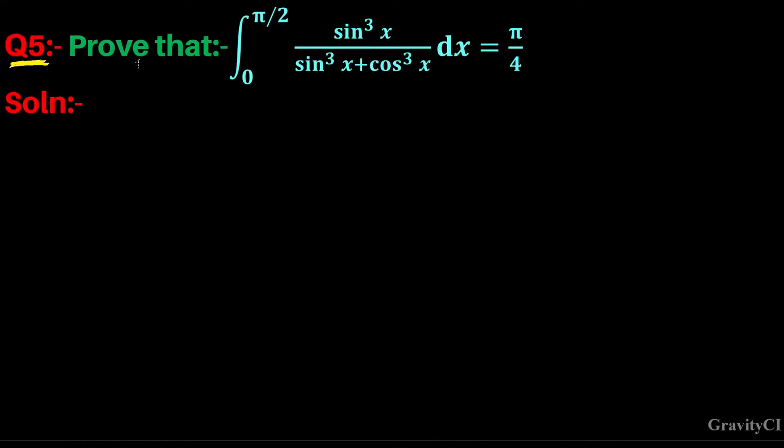Question number 5: Prove that integral 0 to π/2 of sin³x upon sin³x plus cos³x dx equals π/4. So first of all, let I equal to integral 0 to π/2 of sin³x upon sin³x plus cos³x dx.